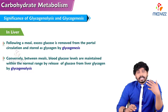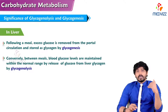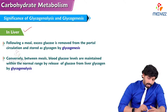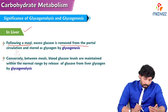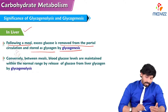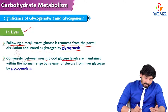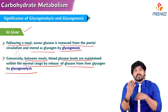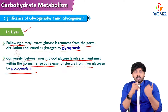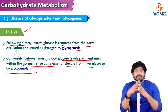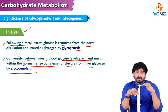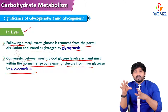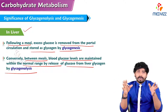This process takes place in liver and muscles. In the liver, following a meal, excess glucose is removed from the portal circulation and stored as glycogen by glycogenesis. Conversely, between meals, blood glucose level is maintained within the normal range by release of glucose from liver glycogen by glycogenolysis. When you skip a meal, the liver allows glycogen to break down, forming free glucose and sending it to circulation to maintain normal blood glucose around 100 to 120 mg per deciliter.